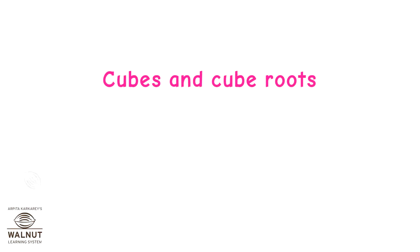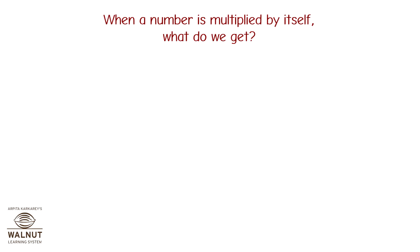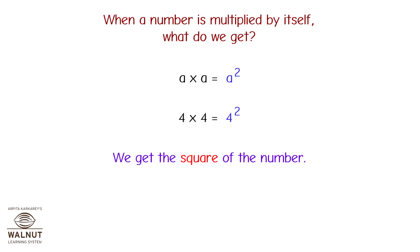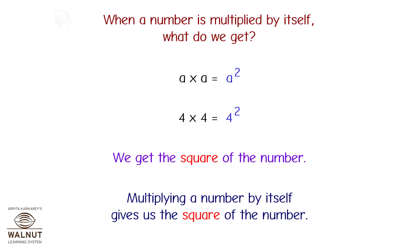Cubes and Cube Roots: Concept of Cubes and Cube Roots. When a number is multiplied by itself, what do we get? a into a is equal to a squared. 4 into 4 is equal to 4 squared. We get the square of the number. Multiplying a number by itself gives us the square of the number.